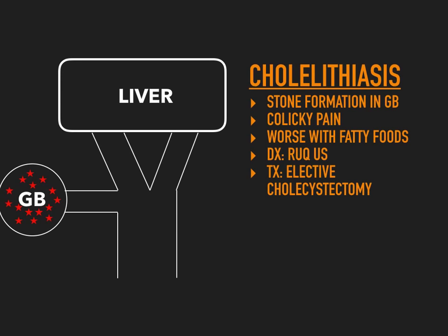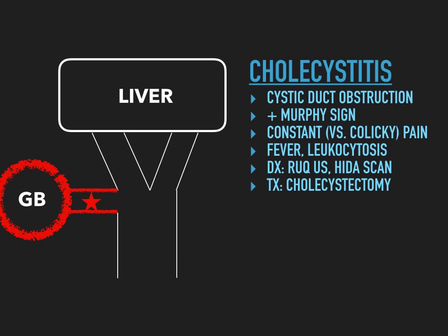The next disease is cholecystitis. The key difference: 'lith' means stones, so cholelithiasis is just stones. 'Itis' means inflammation, and 'cystitis' means inflammation in the cystic duct. What happens is a stone gets lodged in the cystic duct and everything behind that stone — the cystic duct and the gallbladder — becomes inflamed. This is cystic duct obstruction.